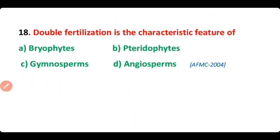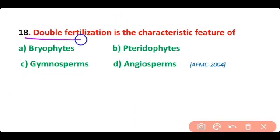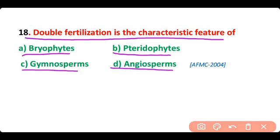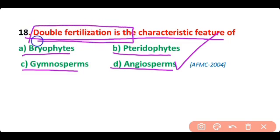Question 18. Double fertilization is the characteristic feature of: bryophytes, pteridophytes, gymnosperms, or angiosperms? The correct answer is option D. Double fertilization is the characteristic feature of angiosperms.